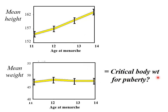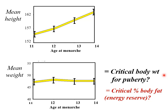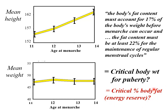Rose Frisch put forward the hypothesis that there was a critical body weight of 47 or 48 kilos on average needed before a girl would go through puberty. She came in for a lot of criticism because nobody could understand how the body could sense what weight it was. She refined her ideas, saying it wasn't body weight itself but rather a critical percentage of body fat — about 17% — that had to be achieved.